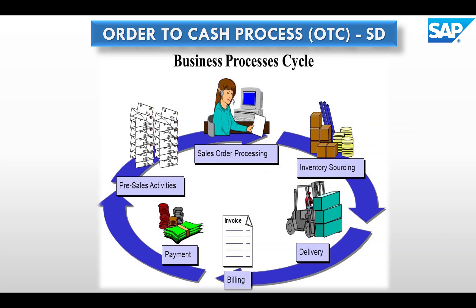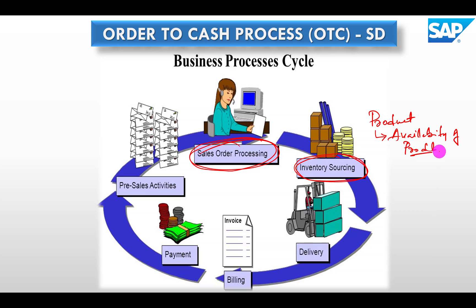Once the sales order is confirmed, we perform inventory sourcing. Based on the sales order, the system checks the availability of the material. If the product is available, the sales order is automatically confirmed. If not, we source the inventory and the delivery time is decided based on the production or procurement time.